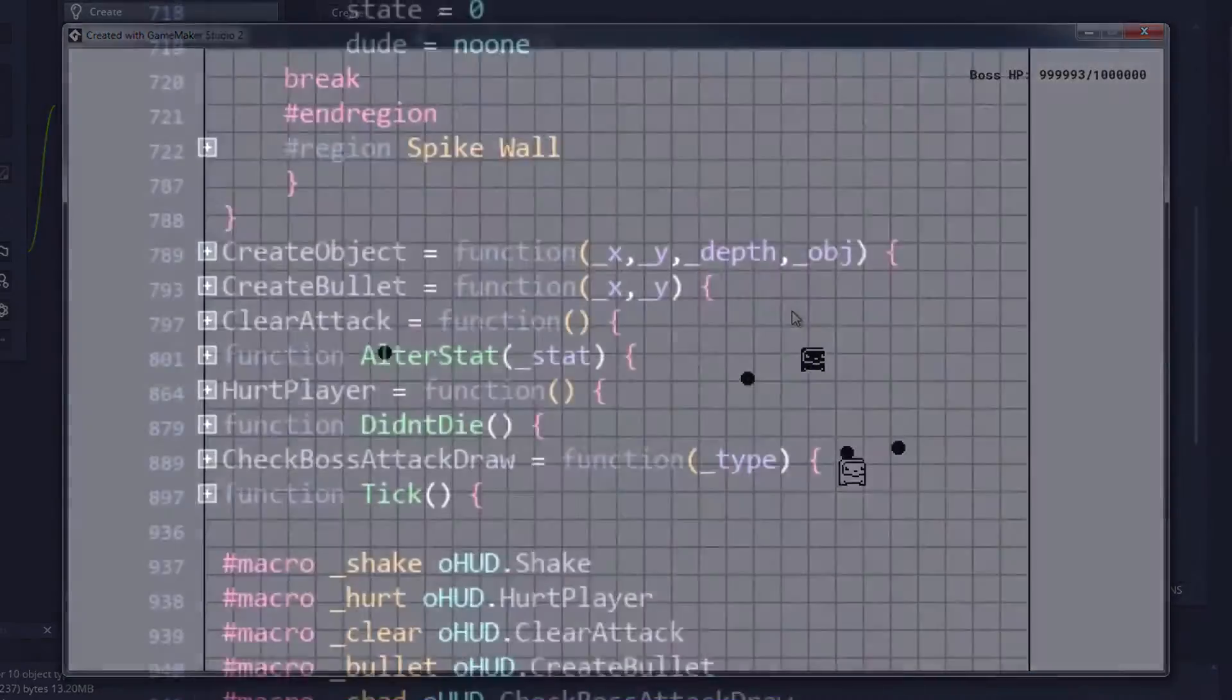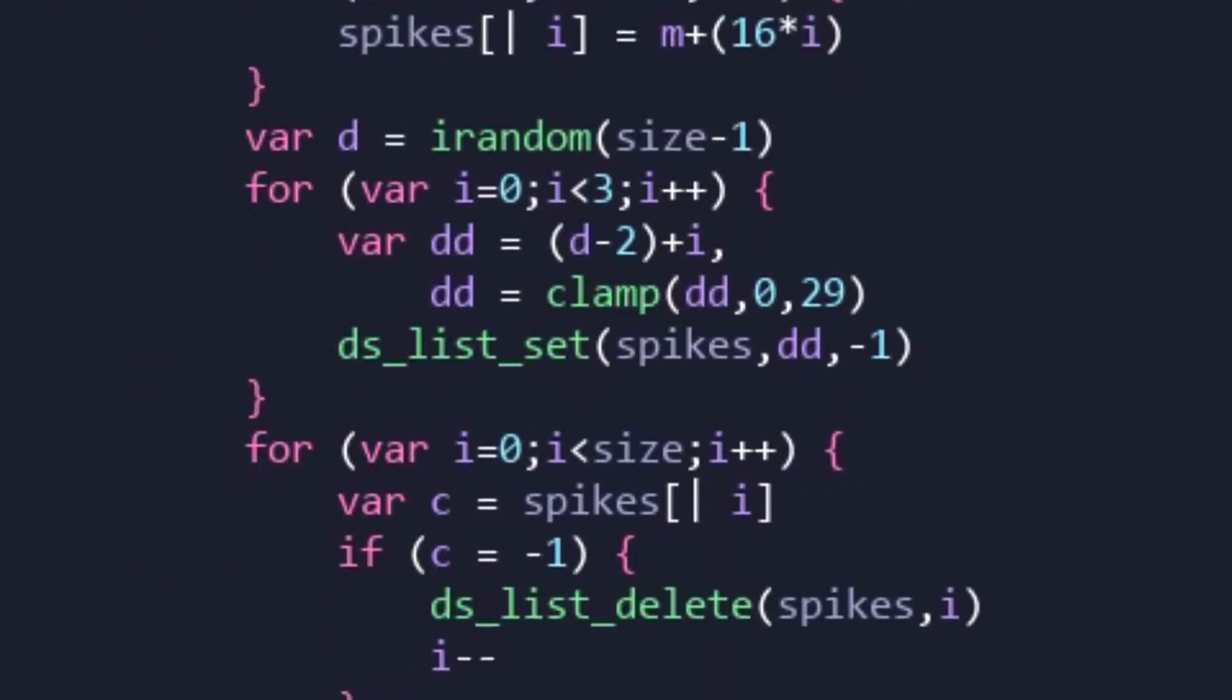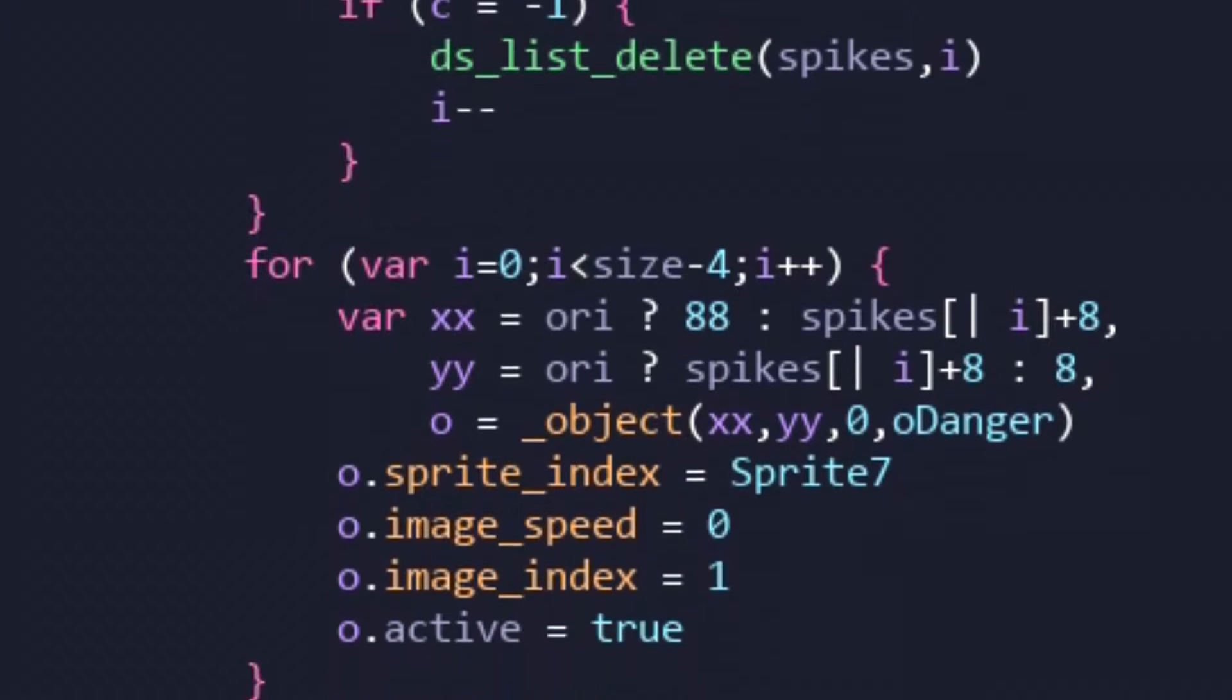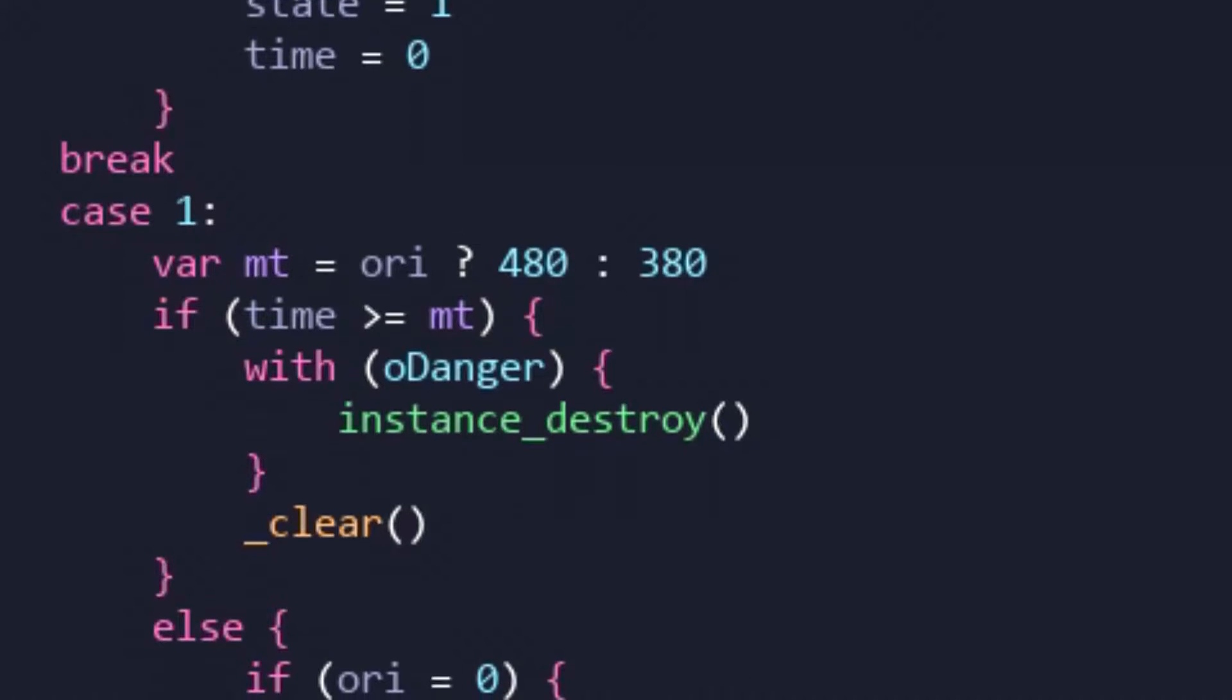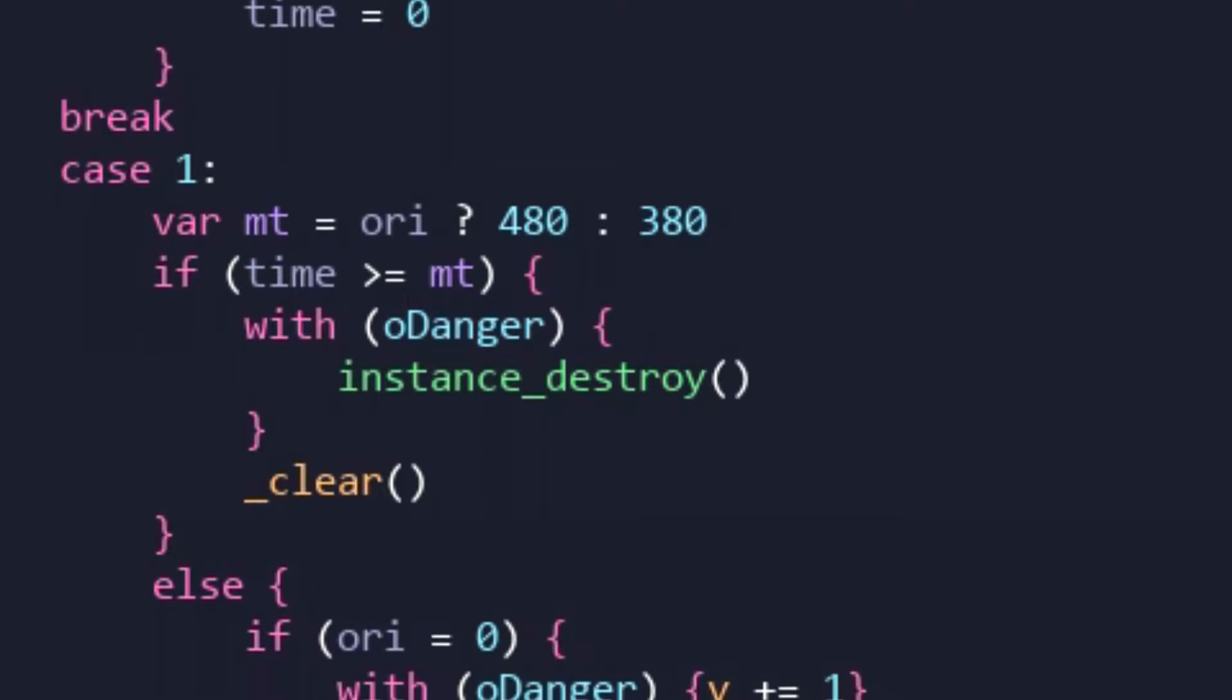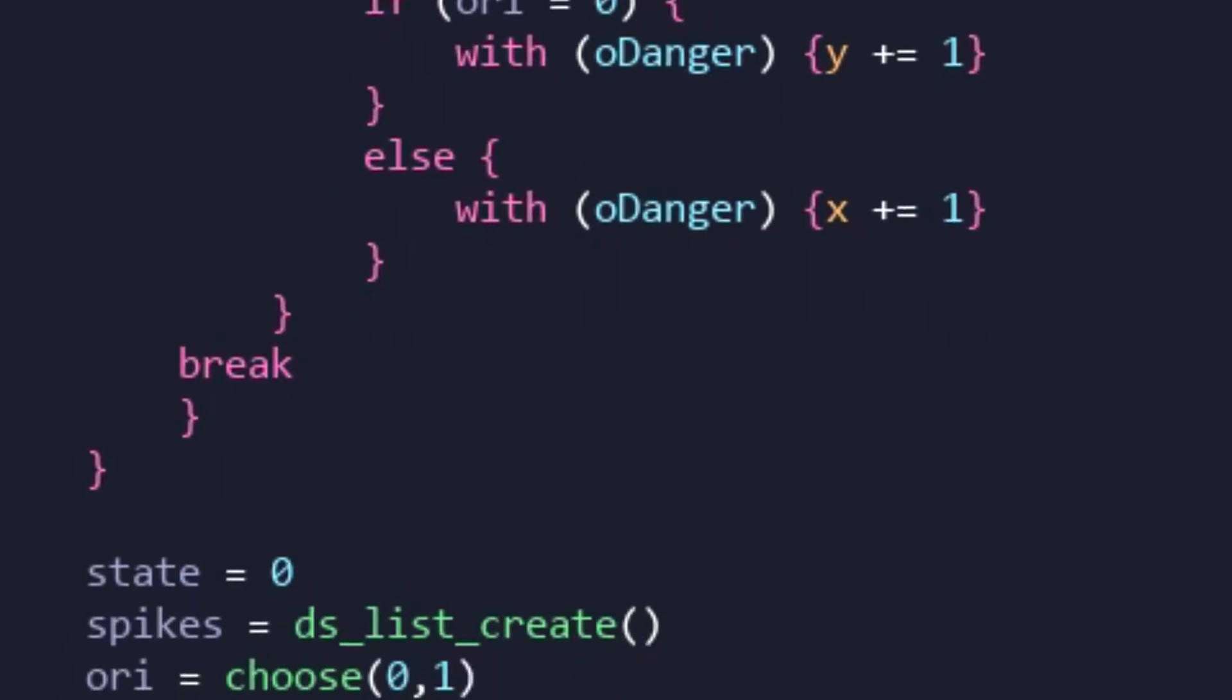And this one is simple. A wall of spikes are spawned either vertically or horizontally. Using some temporary DS lists, a hole is then punched into a random spot along the wall. This allows the player somewhere to avoid taking damage. Once the wall has reached the other side of the arena, it is destroyed, and the process continues.